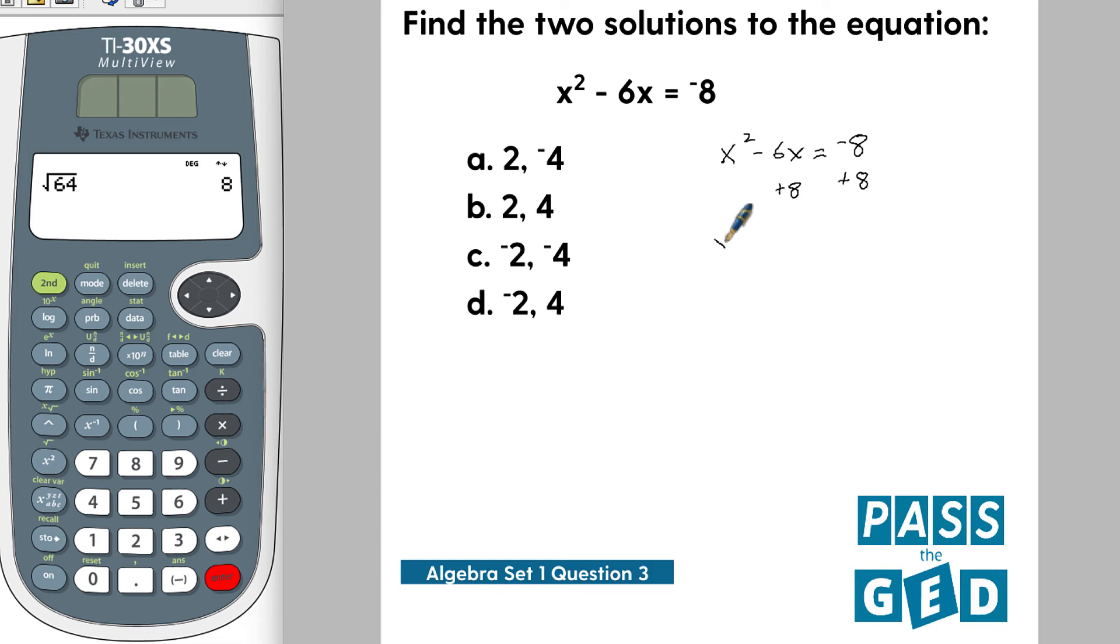That's going to give us x squared minus 6x plus 8 equals 0. So now we can try to solve this. We want to start here with factors of 8. How many ways can we come up with 8?